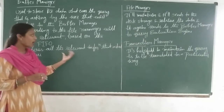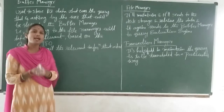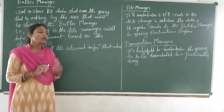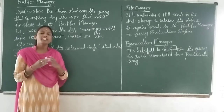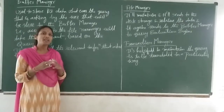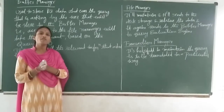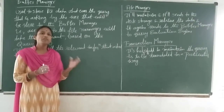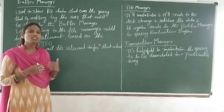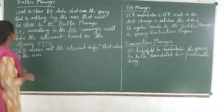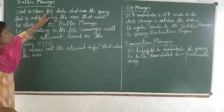We have that information to store in the database system. Query processing translates the information from high-level language into low-level expressions, and we can find the more efficient item — that is query optimization. Query optimization is important in query processing; it finds the most efficient query to identify execution, increasing efficiency for execution. The buffer manager is used to store the data.